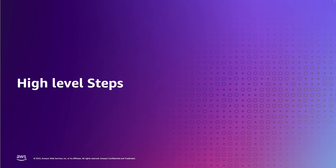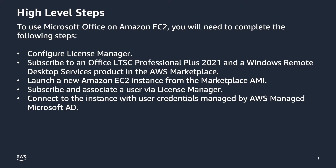Let's talk through the high-level steps before the demonstration. To use Office on Amazon EC2, first configure License Manager in your account — the Managed Active Directory must be in the same account as your EC2 instances. Then subscribe to the two required products in the AWS Marketplace. Next, launch an EC2 instance with the user-based subscription, and finally connect using credentials managed by AWS Managed Microsoft Active Directory.